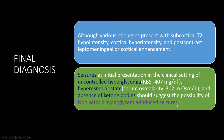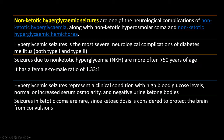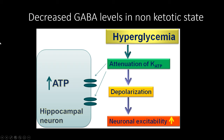Non-ketotic hyperglycemia-induced seizures are one of the severe neurological complications, along with non-ketotic hyperosmolar coma and non-ketotic hyperglycemic hemichorea syndrome. These seizures are seen in both type 1 and type 2 diabetes, more common in patients greater than 50 years of age, with a slight female predilection. The condition is associated with high blood glucose levels, normal or increased serum osmolarity (hyperosmolar states), and negative urine ketone bodies — to differentiate from diabetic ketosis, since ketosis is considered to protect the brain from convulsions.